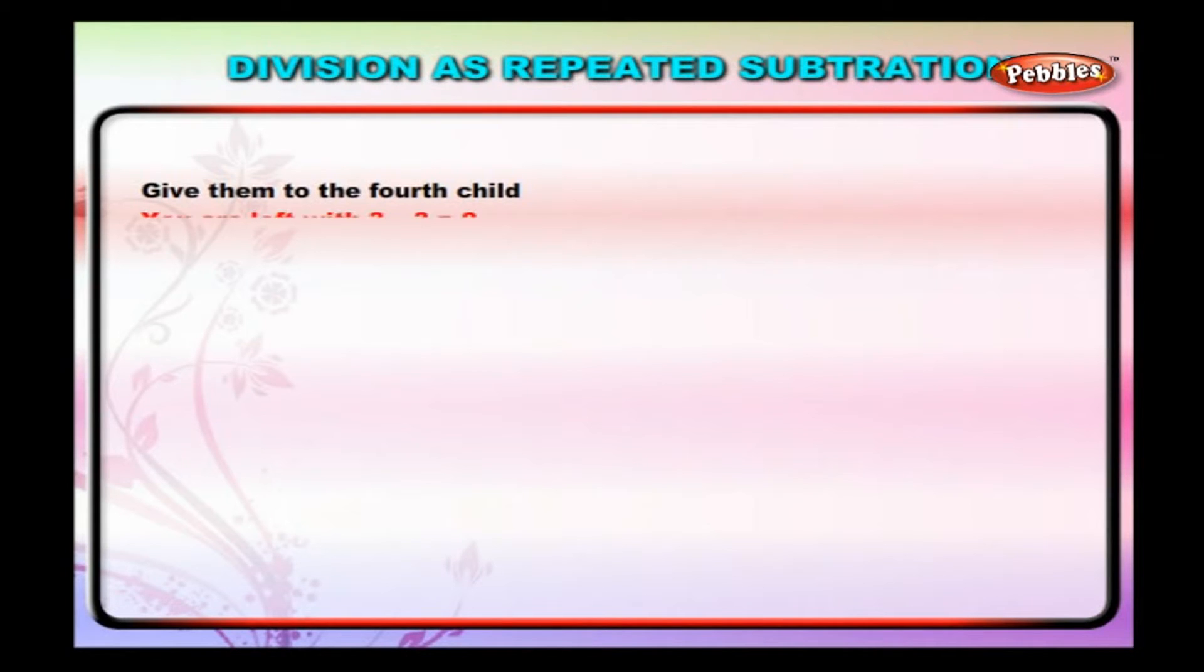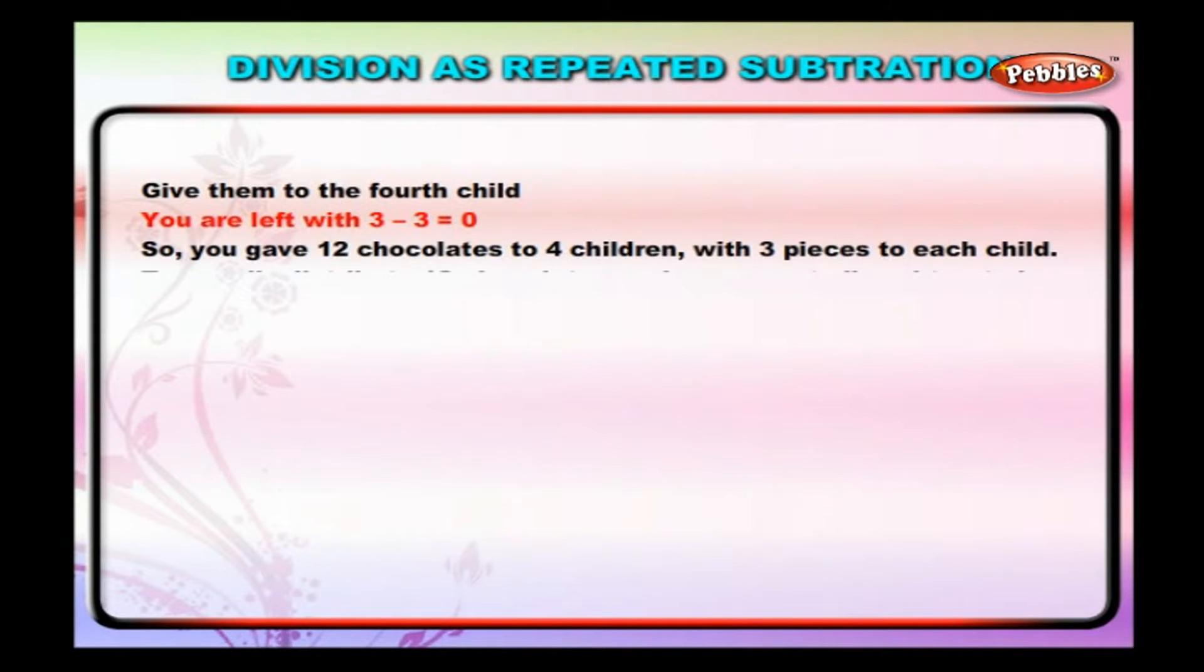Give them to the fourth child. You are left with 3 minus 3 which is equal to 0. So, you gave 12 chocolates to 4 children with 3 pieces to each child.